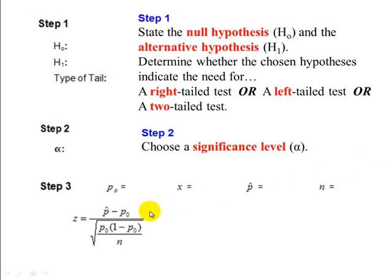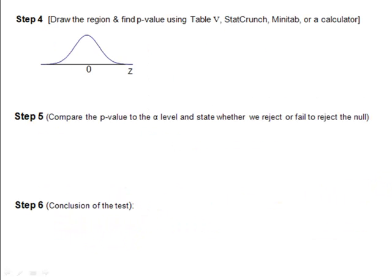Number three, this is our formula for the test statistic. It is a Z, and it comes from using our four values here. Once we have computed the test statistic using this formula, we go on to step four.